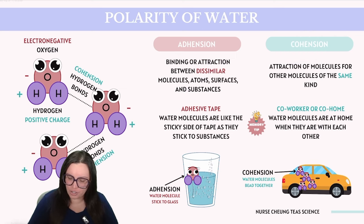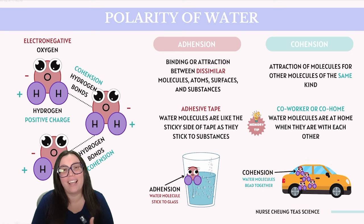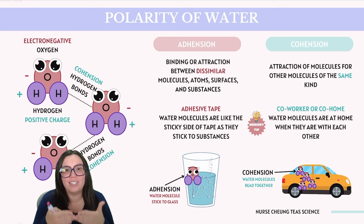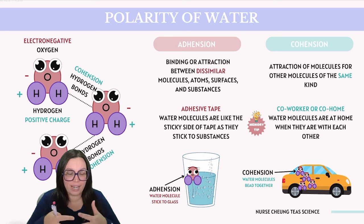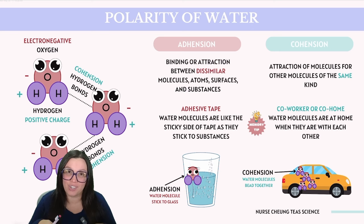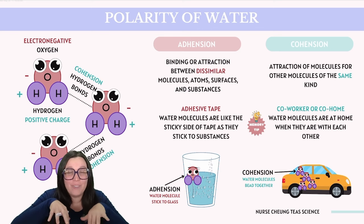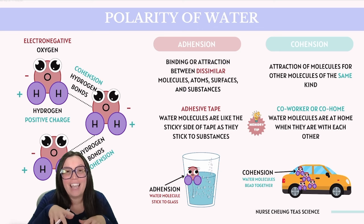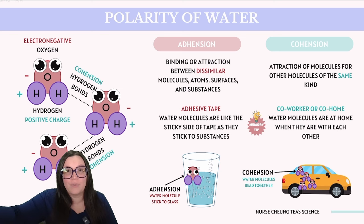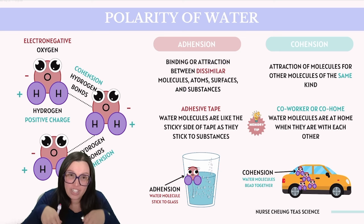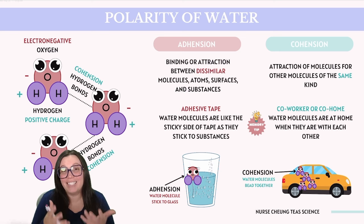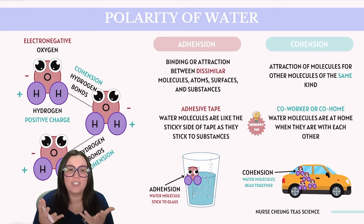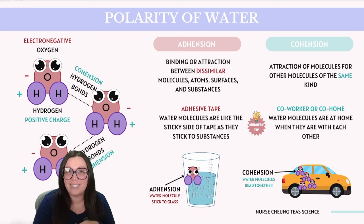Picture water droplets on a waxed car's surface — they tend to bead up because they prefer sticking to each other rather than spreading out over the surface of the car. Additionally, cohesion explains why water striders, those little bugs, can effortlessly move across the surface of a pond or a stream without going into the water. This is because cohesion enhances the surface tension of water, enabling these little bugs to skate across it without sinking.